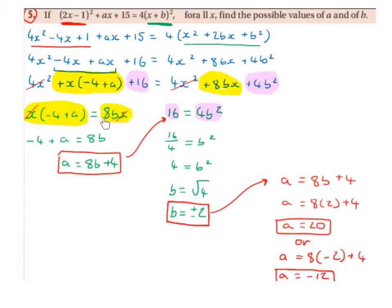So we have minus 4 plus a is equal to 8b. So we're going to bring the minus 4 over the equal sign to get the a on its own. So we have a equals 8b plus 4.